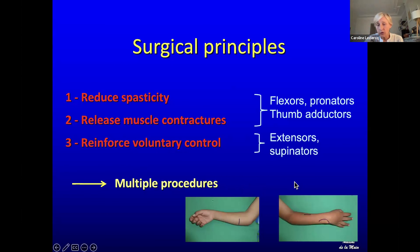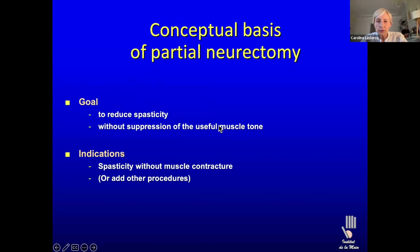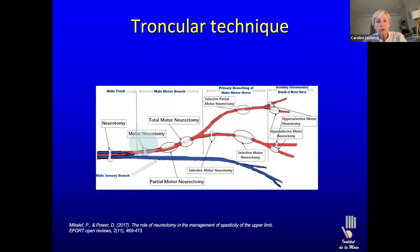Sometimes we have to operate quite early if there are orthopedic deformities that are worsening — I'm thinking of some traumatic brain injuries with severe elbow or wrist deformities that keep worsening despite all medical care. If we are dealing with functional surgery to restore function, the main principle is to restore the balance. What do I mean? We want to reduce the spasticity, release the muscle contracture, and reinforce voluntary control.